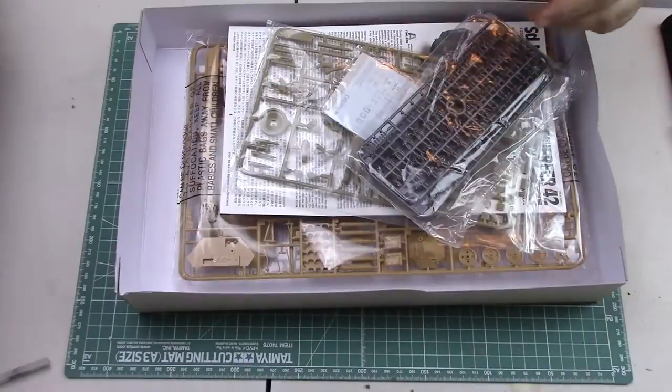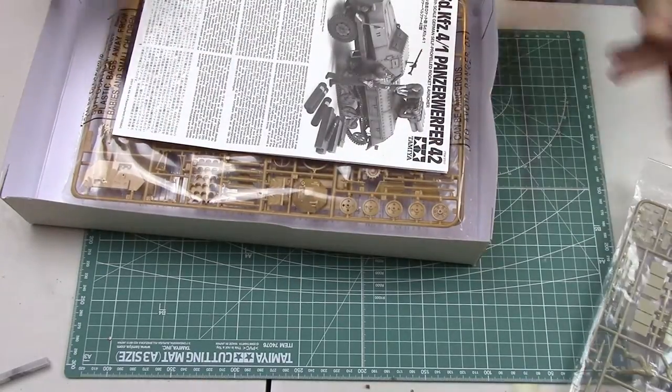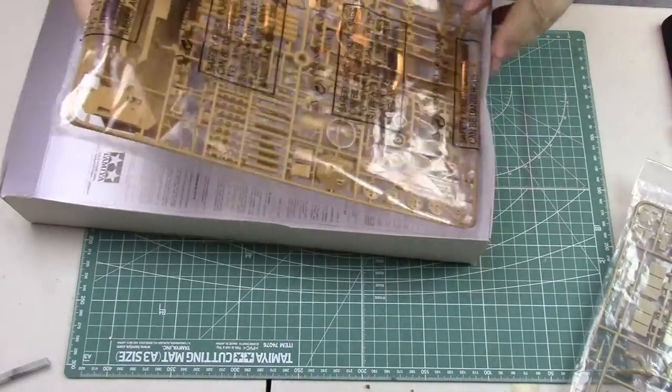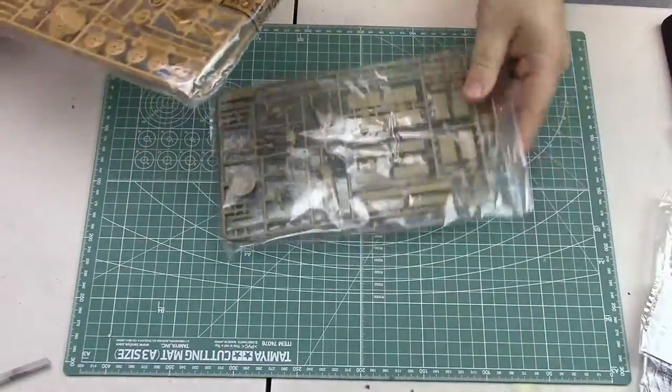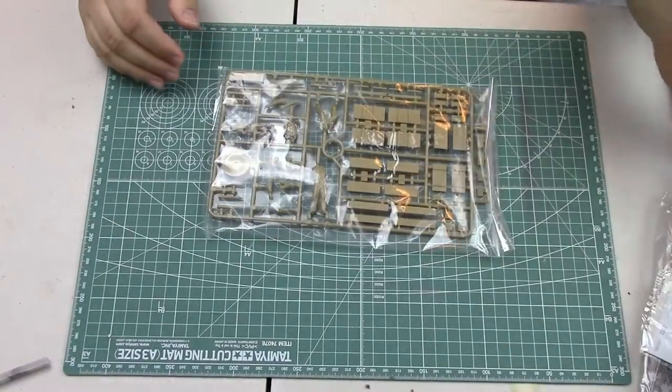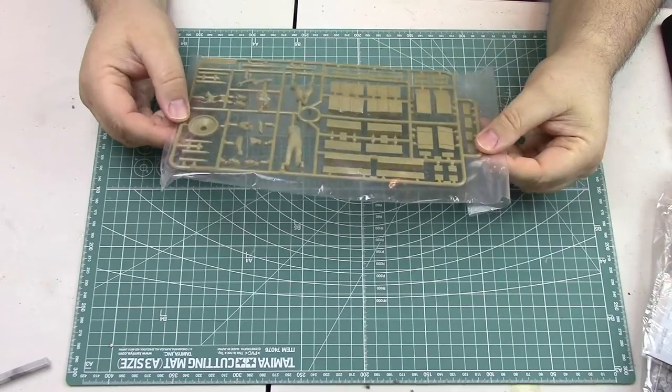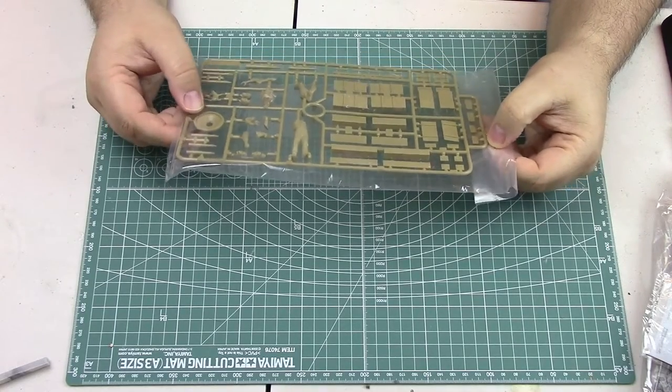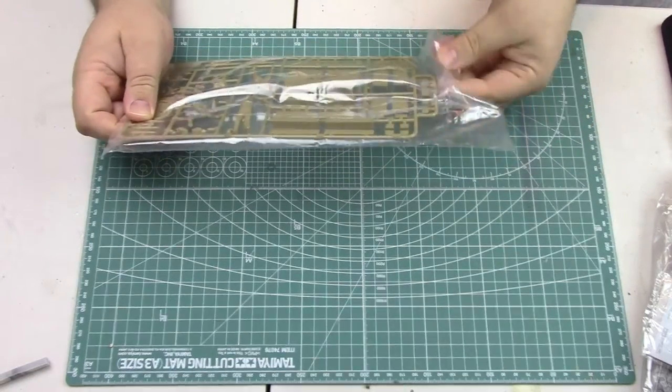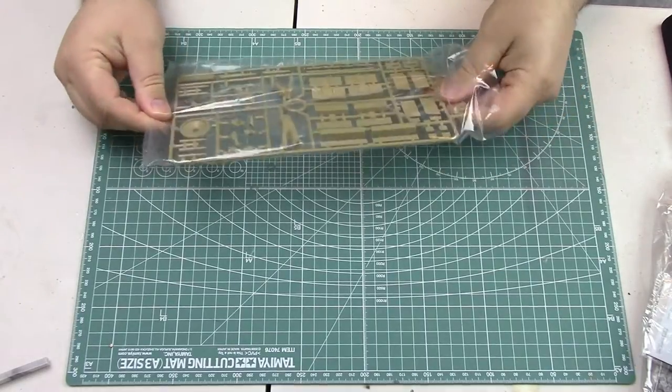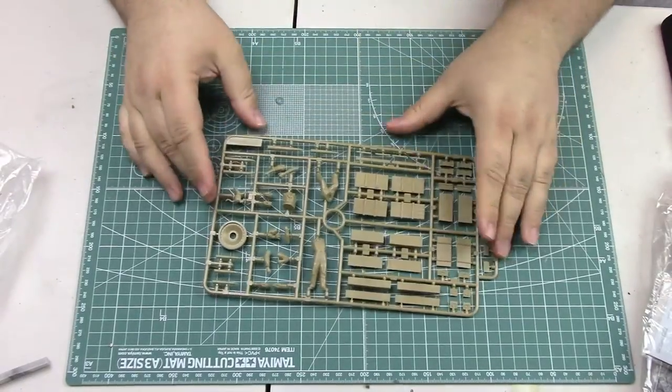Let's go ahead and open this thing up and take a look at the plastic inside. We have individual track links, decals, instruction sheet, and sprue bags. Now Tamiya has supplied this sprue. I've looked at this kit before so there's no surprises here. This is the Tamiya sprue that basically came from a Panther loading crew or tank loading crew accessory set.